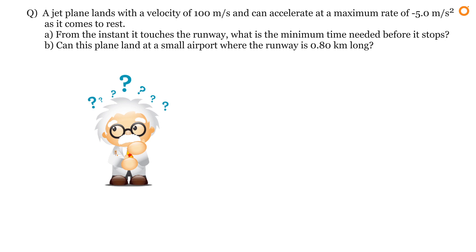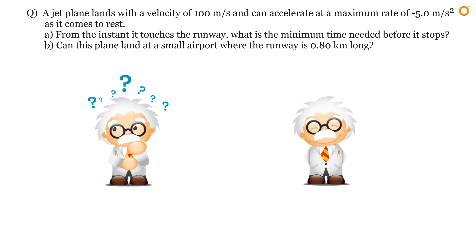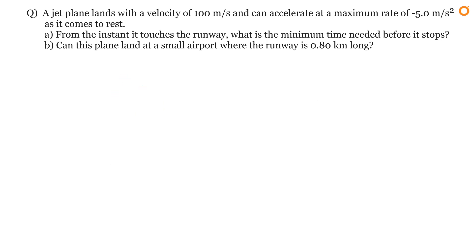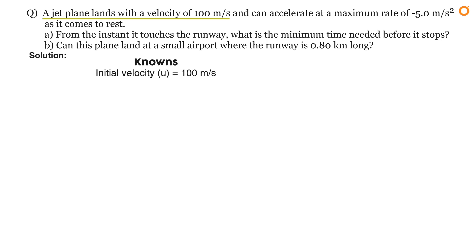Have you understood the problem? If not, read it again more carefully. If yes, start listing the knowns and unknowns. In this problem it is clearly stated that the jet plane lands with a velocity of 100 meters per second — that means its initial velocity, represented by u, equals 100 meters per second.